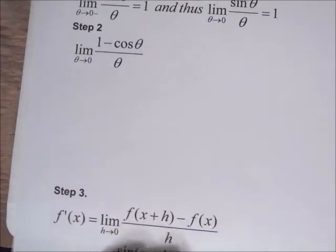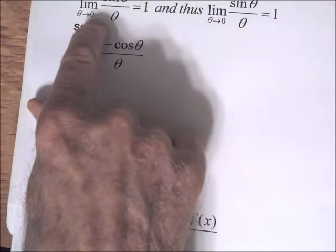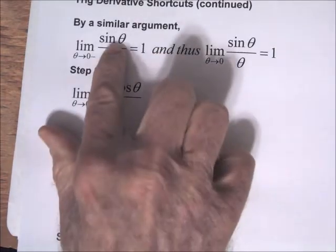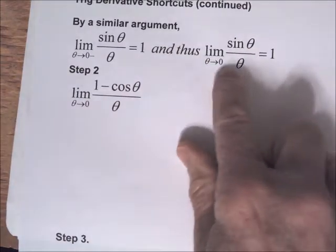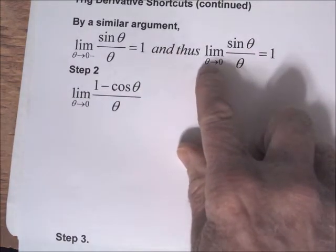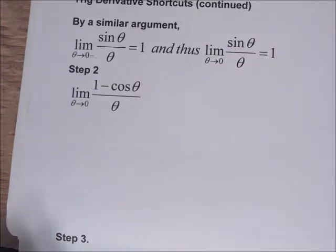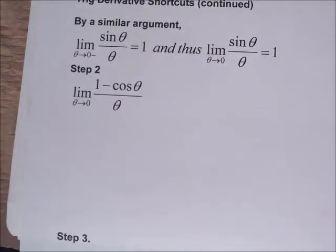We can make a similar argument that as theta goes to 0 from the negative side, sin θ/θ equals 1. That means the two-sided limit — the limit as theta goes to 0 of sin θ/θ — equals 1. This limit will be used in the proof of the derivative of the sine function.